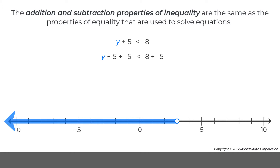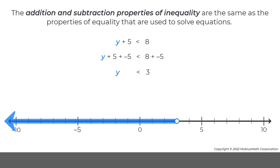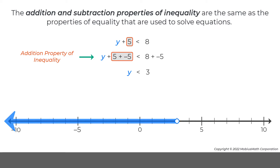On the left side of the equation, 5 plus negative 5 equals 0. On the right side of the equation, 8 plus negative 5 equals 3. Notice that applying the addition property of inequality eliminated one of the terms on the left side of the inequality.